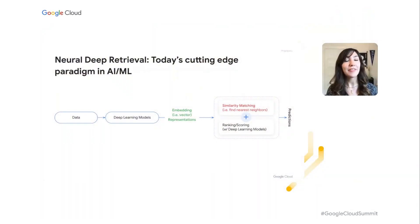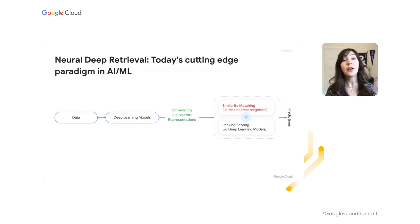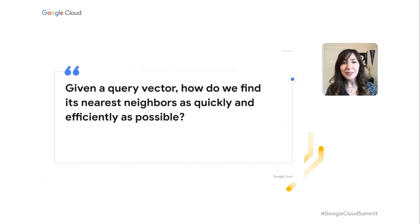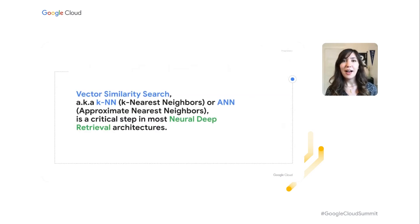Often we focus on the exciting embedding models themselves, but we don't pay as much attention to the practical aspect: how do we actually run the calculation to find which vectors are similar? Usually we use a distance metric like cosine similarity or dot product, but these are mathematical operations that can be really computationally costly, especially on a very large vector dataset. So the question is: given a query vector, how do we find its nearest neighbors as quickly and efficiently as possible? We solve this with techniques like k-nearest neighbors or approximate nearest neighbors search, which is one of the most critical steps in neural deep retrieval architectures.